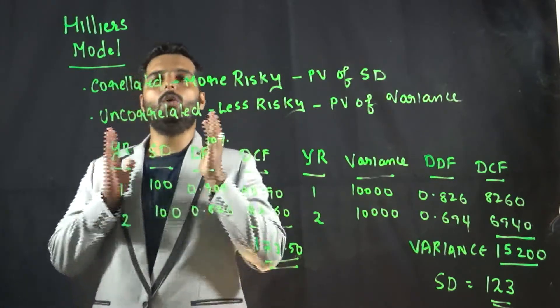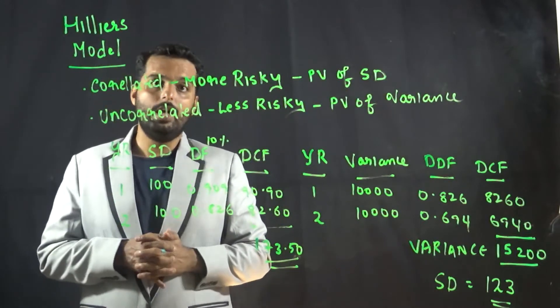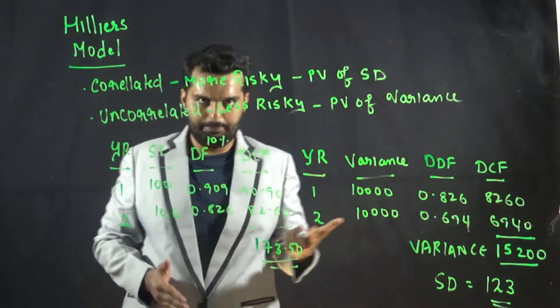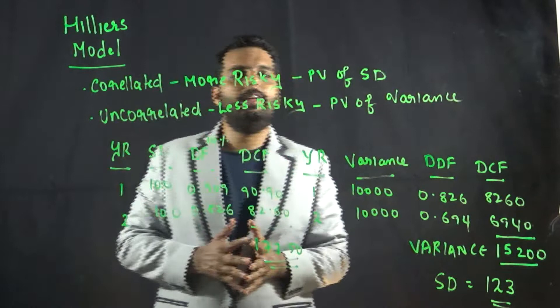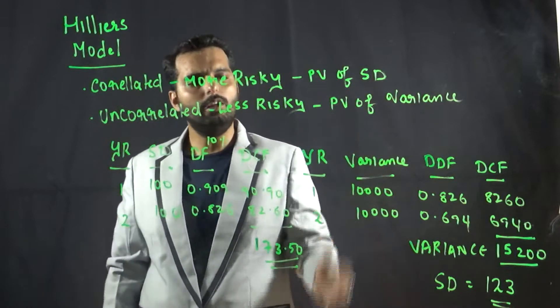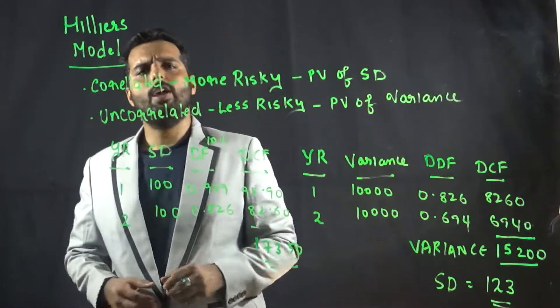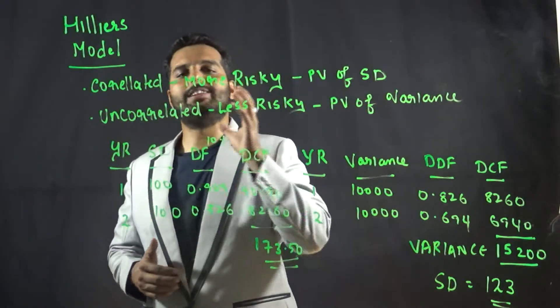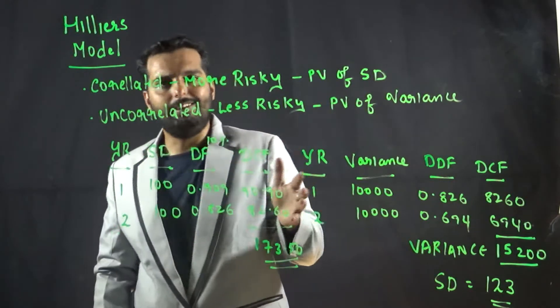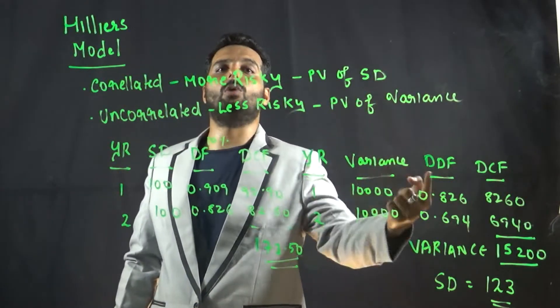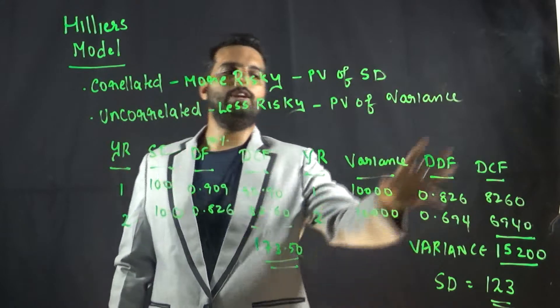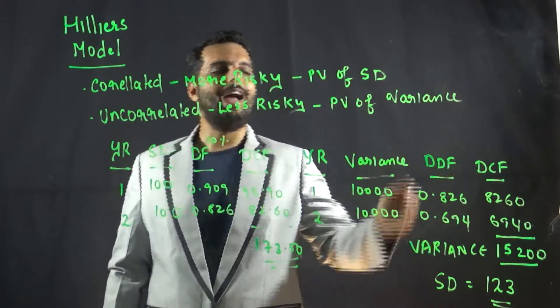Now assume the same numbers are not correlated but they are uncorrelated. In that case, we will take the variance. So for 100, the square is 10,000, 10,000. But now when we use the discount factor, we won't take the 10% discount factor for year one. We will do a double discounting, which means year one we will use the discount factor of year two, year two we will use a discount factor of year four.